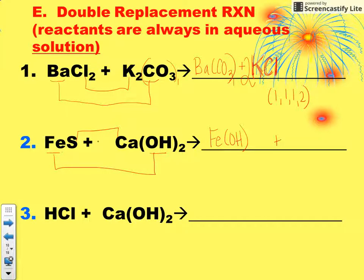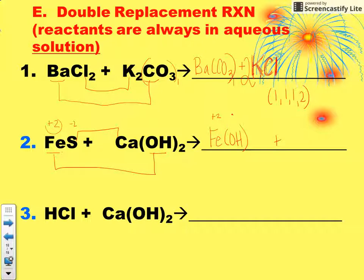Fe and OH come together as a new pair — iron is dancing with hydroxide. Looking back at the reactant formula, sulfur is always a negative two charge. Since we don't see any subscripts, we know this is a reduced formula, which means iron must have been a plus two charge. So it's the iron(II) ion we're using. Iron is plus two and hydroxide is always minus one, so crisscross your charges: the 1 comes down and the 2 comes down.